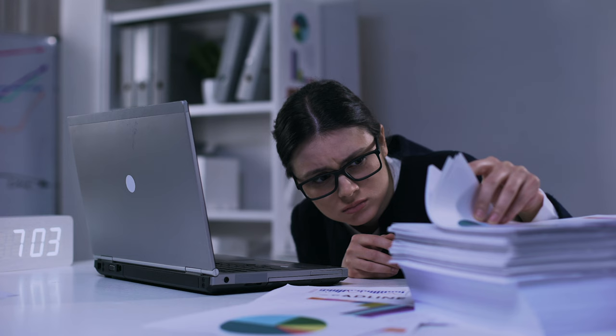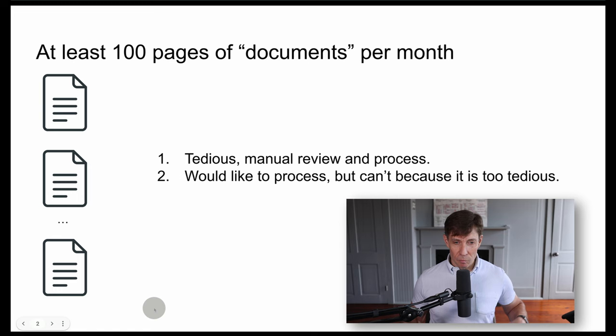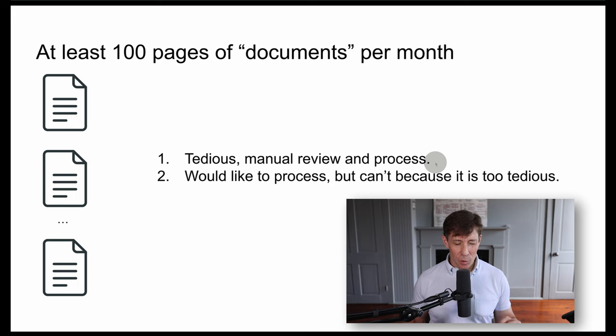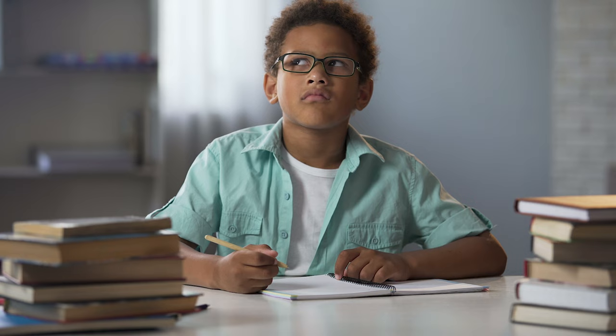Let's start with an overview of automated document processing. This use case is appropriate for situations where you're handling at least hundreds of pages of documents per month — a couple of long documents such as big contracts, or maybe hundreds of emails or chat conversations. Typically in most organizations, there's a tedious review process where people have to manually review, edit, and process these documents, or a situation where they'd like to process them but can't because it's too tedious and would take too much time.